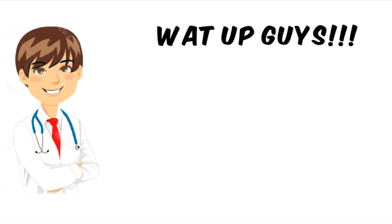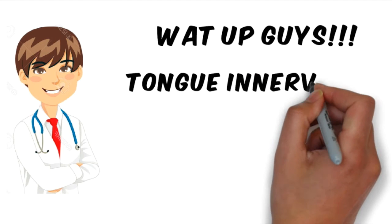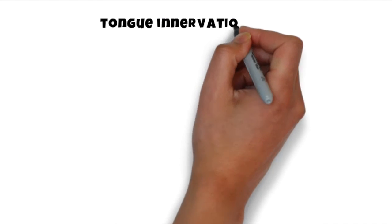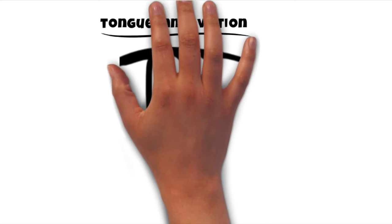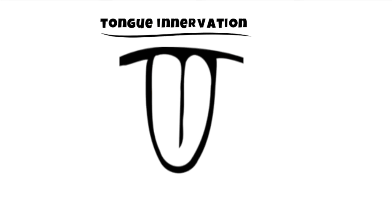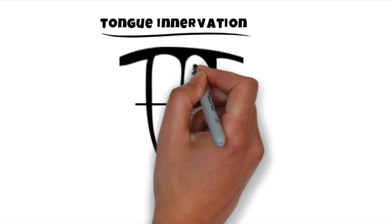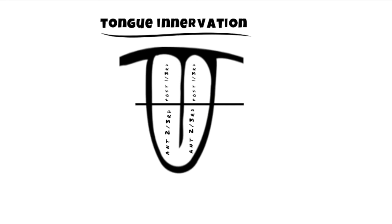What's up guys, it's Tenzin. In this video we are going to talk about a very small topic, the innervation of the tongue. Anatomically, we divide the tongue into an anterior two-thirds and a posterior one-third.